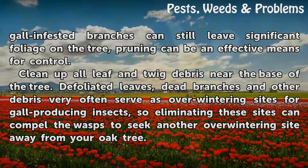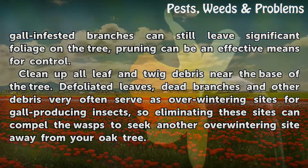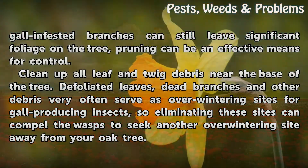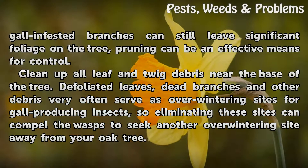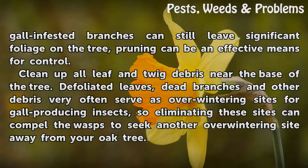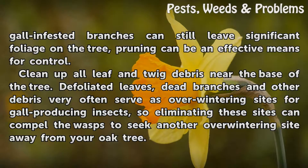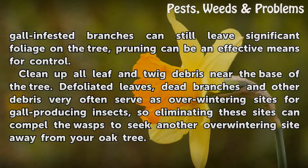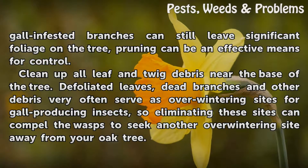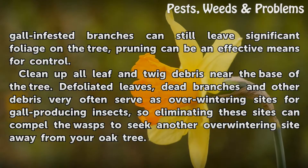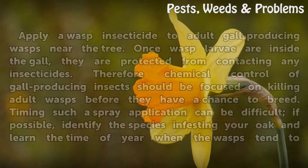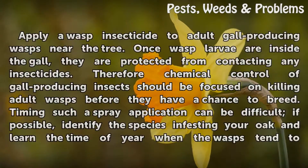Clean up all leaf and twig debris near the base of the tree. Defoliated leaves, dead branches and other debris very often serve as overwintering sites for gall-producing insects, so eliminating these sites can compel the wasps to seek another overwintering site away from your oak tree.